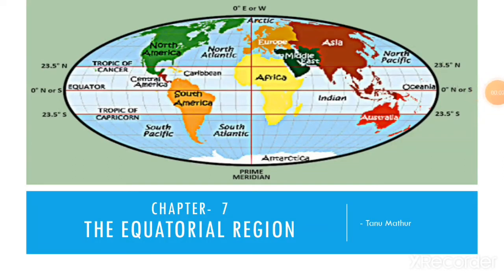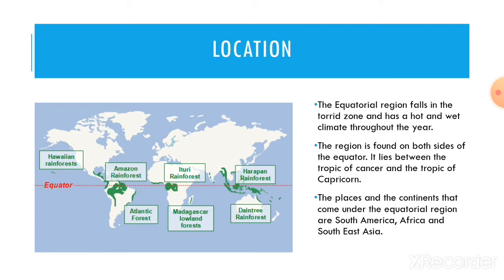Hello everyone. In chapter 7, the equatorial region, we will study about its location and the Democratic Republic of the Congo. The equatorial region falls in the torrid zone and has a hot and wet climate throughout the year. The region is found on both sides of the equator. It lies between the Tropic of Cancer and the Tropic of Capricorn. The places and continents that come under the equatorial region are South America, Africa, and Southeast Asia.